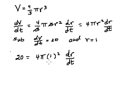Just divide both sides by 4π and we have dr/dt is equal to 20 divided by 4π. Reduce that, divide top and bottom by 4 and we have 5/π.